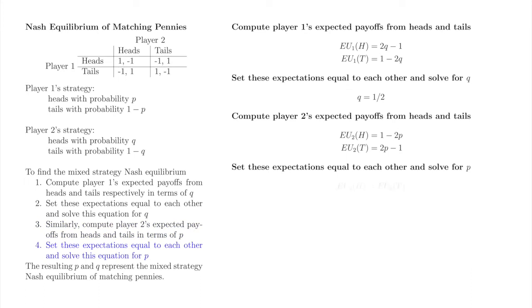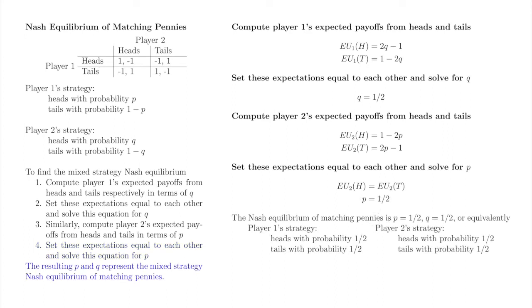Now, solve for p. Player 2 is indifferent between heads and tails when her expected payoff from heads is equal to her expected payoff from tails. Using the expressions we found in step 3, we obtain 1 minus 2p equal to 2p minus 1, so p is equal to 1 half. We can write the mixed-strategy Nash equilibrium formally as shown at the bottom of the right-hand column, or a shorter version could specify that p is equal to q is equal to 1 half.